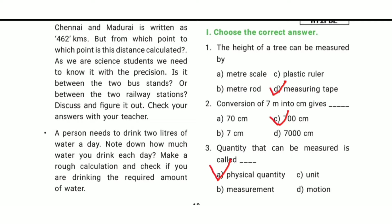Second one: Conversion of 7 meters into centimeters gives dash. The answer is option C — 700 centimeters. Third one: